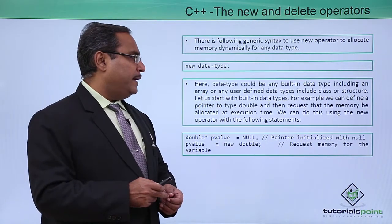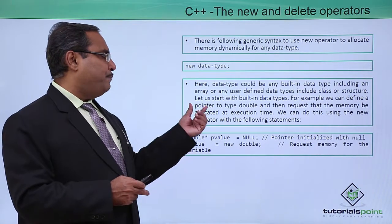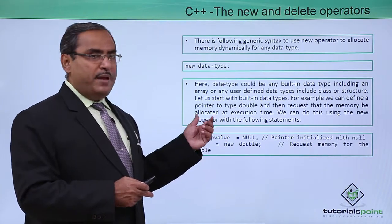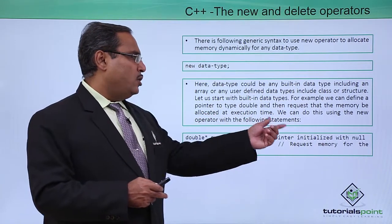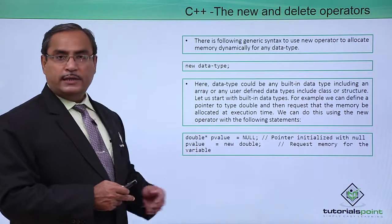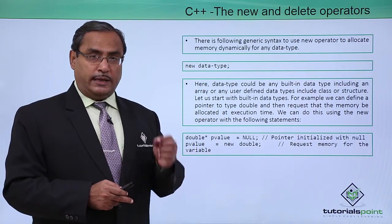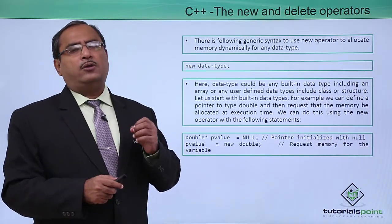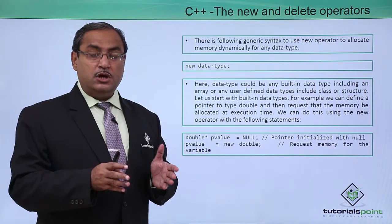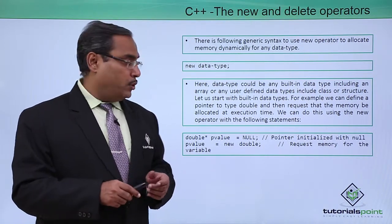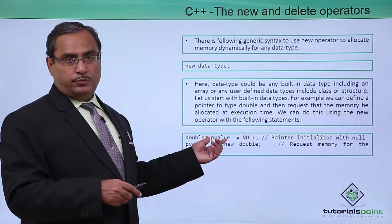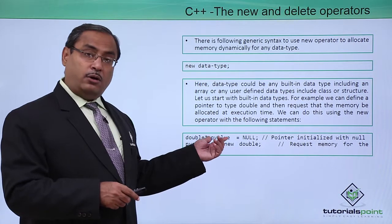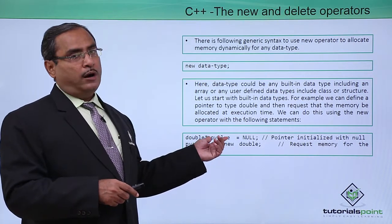Let us start with built-in data types. For example, we can define a pointer to type double and then request that the memory be allocated at execution time. We can do this using the following statement. The operator name is new, which is analogous to the malloc or calloc functions from C programming. So double pointer p_value — here p_value is a variable that holds an address, and the content at that address will be of type double.